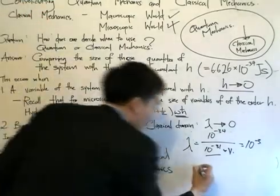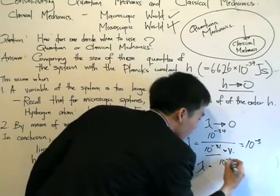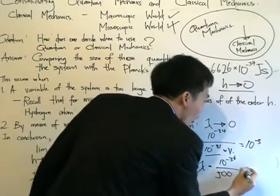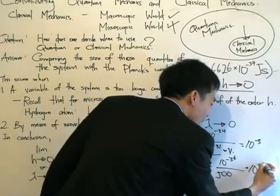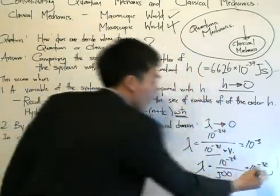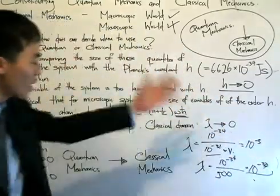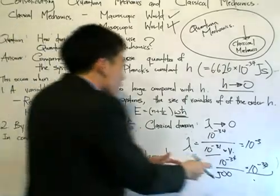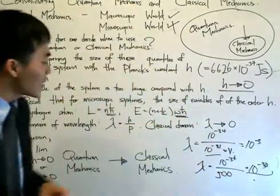But when we go to the macroscopic world—let's just say take a car—λ is 10 to the minus 34. A car mass is about maybe 500 kg, so we divide by 500. The order is already 10 to the minus 33, insignificant. So you can see this case: λ tends to zero, the use of classical mechanics is enough.